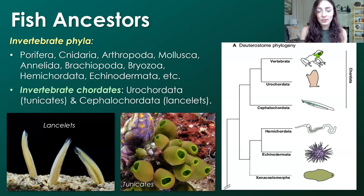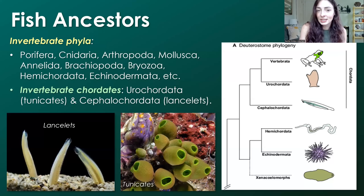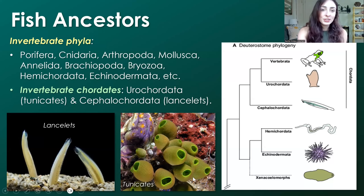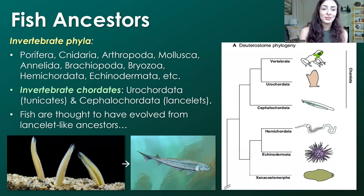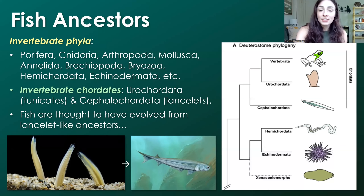Even though there are all of these other invertebrate phyla other than chordata, there are a couple types of invertebrate chordates — chordates like ourselves but without vertebrae. These include tunicates and lancelets. Fish are thought to have evolved from lancelet-like creatures, some type of invertebrate chordate, even if it's not necessarily within the exact group that lancelets are in, the cephalochordata group.